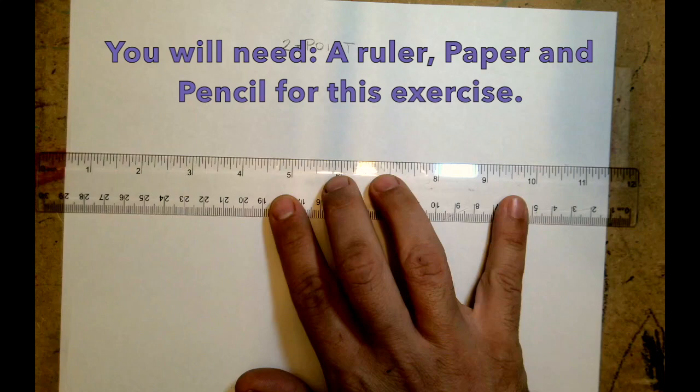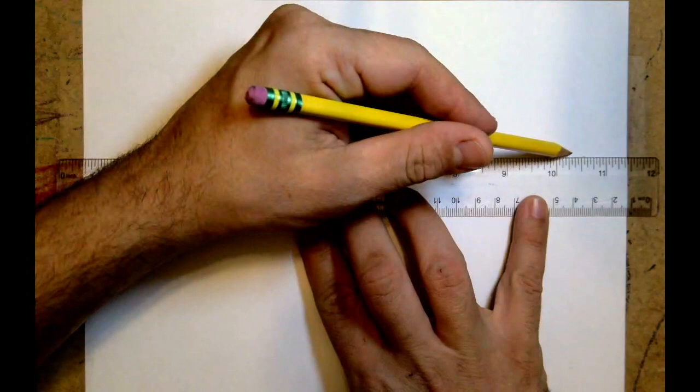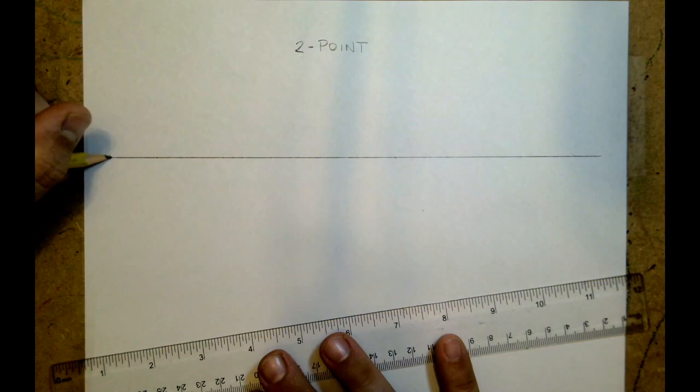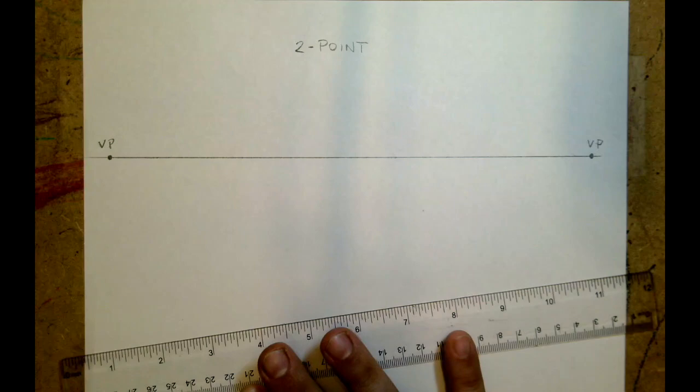Okay, so what we're going to do is create a cityscape. I'm going to create a horizon line on the upper third of my paper, and I'm going to place a vanishing point on the extreme left and extreme right of the paper for this exercise. We'll label those vanishing points just for you, and again we have two.